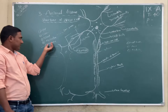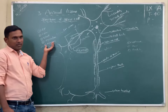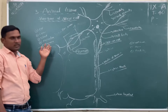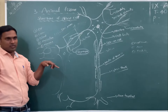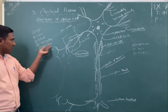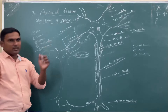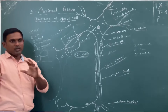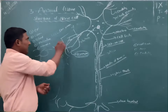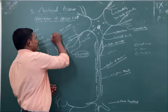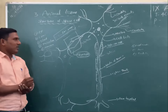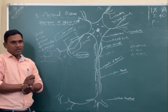Now we will discuss about the nervous tissue. Nervous tissue means nervous cell, it is called as a neuron. So in our body, there are 10 million neurons. In our body, how many neurons are there? 10 million neurons are there.